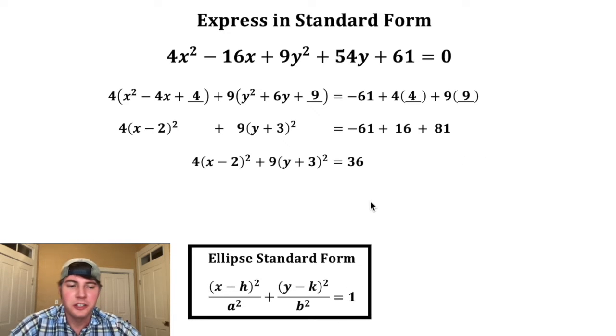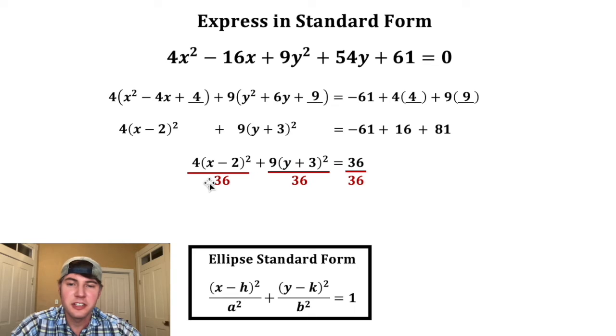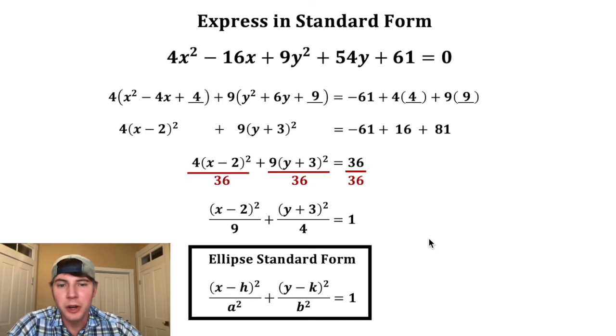This is supposed to be equal to one. So we're gonna divide everything by 36. Four over 36 leaves us with a nine in the denominator. Nine over 36 leaves us with a four in the denominator. And 36 over 36 gives us the one that we wanted.